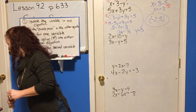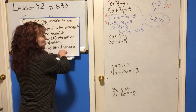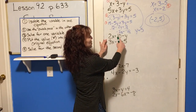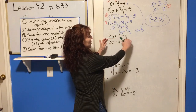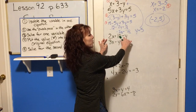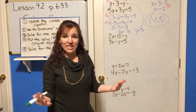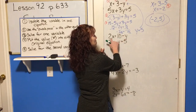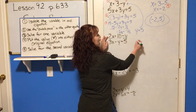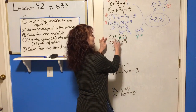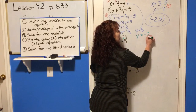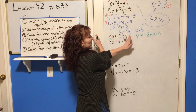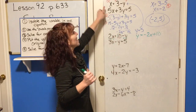Let's do another one. On this one we need to do the step of solving for an unknown. We've got 2x equals 10 minus y. To avoid fractions, instead of dividing by 2, let's add y to both sides — making it a positive y on this side — then subtract 2x from both sides. Now y is all by itself: y equals negative 2x plus 10.